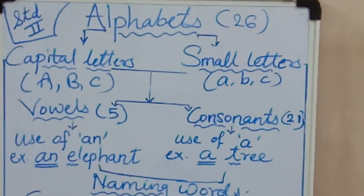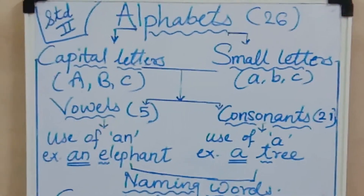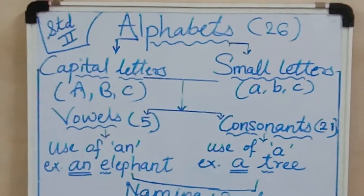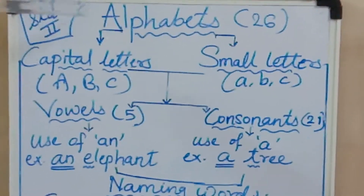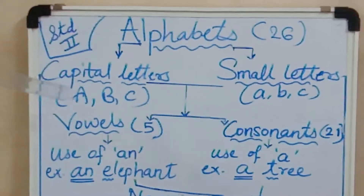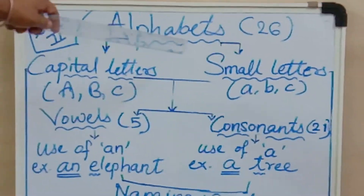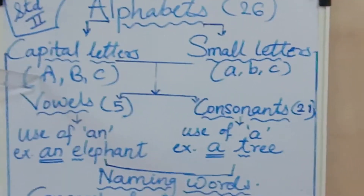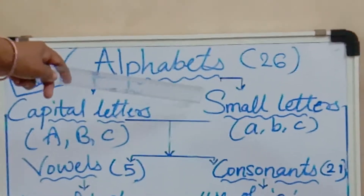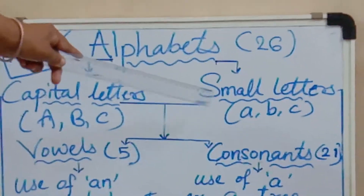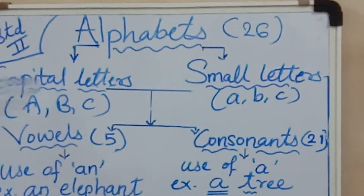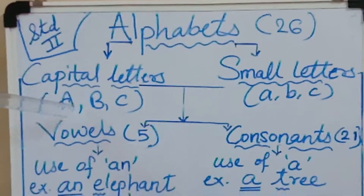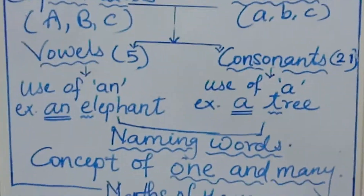See, my dear students, when you learn any language or you like any language, alphabets are very necessary. In English, there are 26 alphabets. These alphabets are divided into capital letters and small letters. You are able to see them in capital form as well as in small form. When we use these alphabets, there are vowels and consonants.